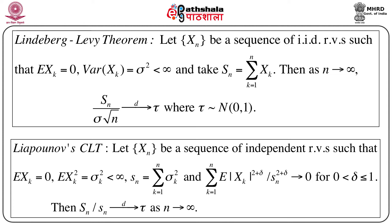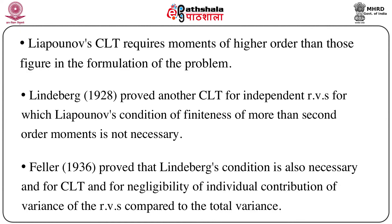This is known as Lyapunov's condition for 0 < δ ≤ 1. Then S_n, the sum X_1 + X_2 + ... + X_n divided by s_n, converges in distribution to τ where τ follows Normal(0,1) as n goes to infinity. One important thing is that Lyapunov's CLT requires moments of higher order than those appearing in the formulation of the problem.